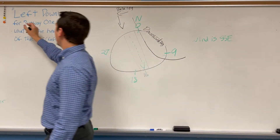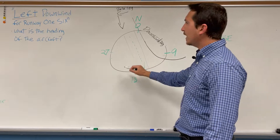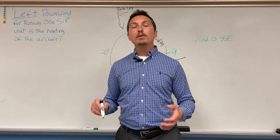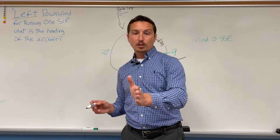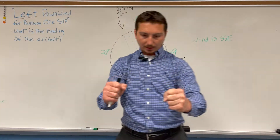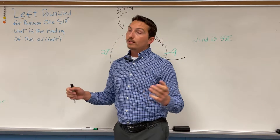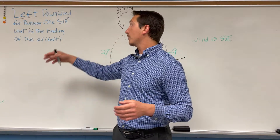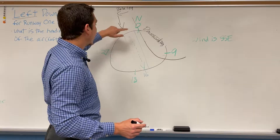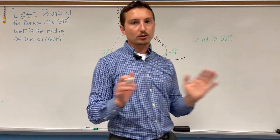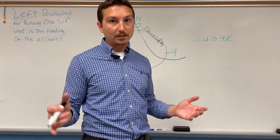So what does 'left' mean? This confuses a lot of people. 'Left' does not mean the plane is on the left side of the runway. What it means is that the plane is going to make left-hand turns as it lands. Typically planes turn to the left when circling a runway because the pilot sits on the left side of the aircraft and can see out that window more easily. Sometimes it could be right — if they say 'right downwind runway 16,' the airplane is going to turn to the right. Usually on practice questions it's almost always left, because that's the FAA standard for most airports.